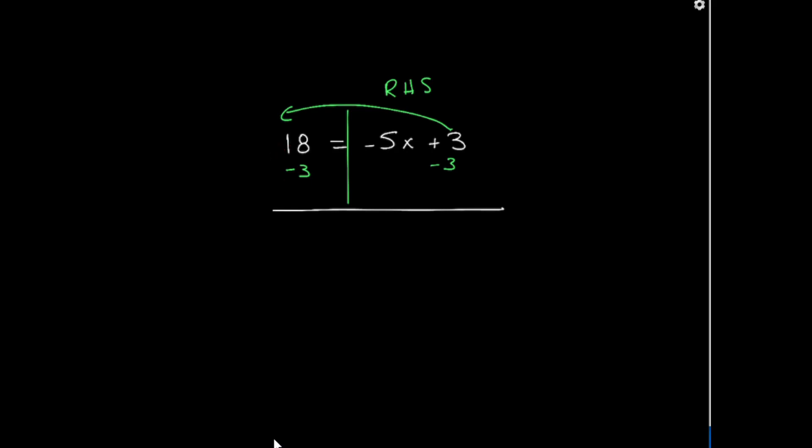I have 18 minus 3, which gives me positive 15. You don't have to write the positive, but it does help by saying it because that tells you whether the sign is positive or negative. I take my negative 5x and bring it down. And this is a two-step equation because I just did one step, but I'm not finished yet.